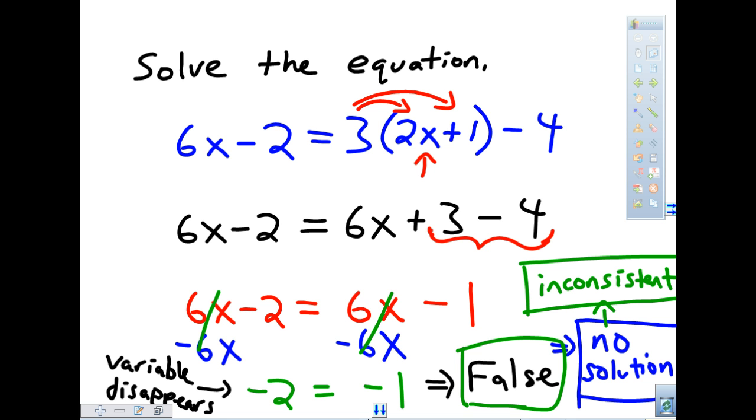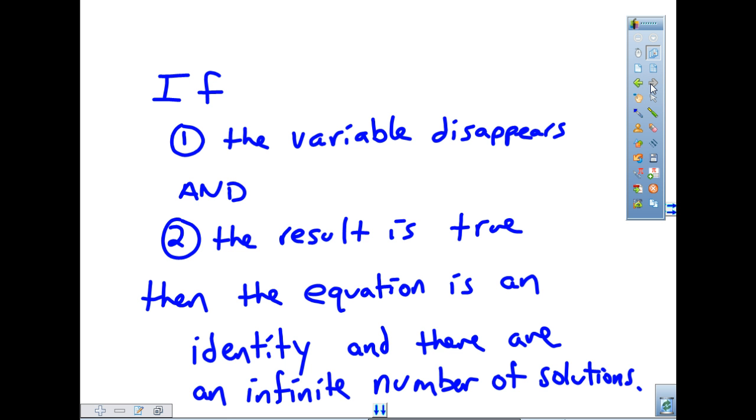If, however, the resulting statement is true, then you would have an identity. There would be an infinite number of solutions in that case. So if the variable disappears and the resulting equation happened to be true, then that equation would be an identity, and there would be an infinite number of solutions to that equation. I'm not going to do an example of that type, but that's how you would recognize if it were an identity.